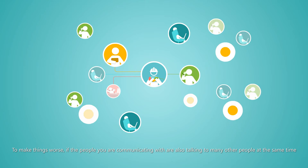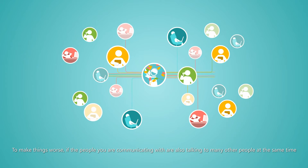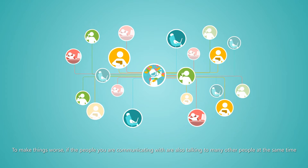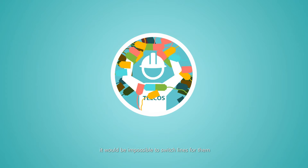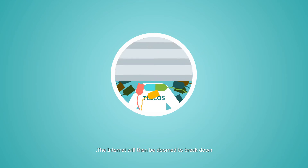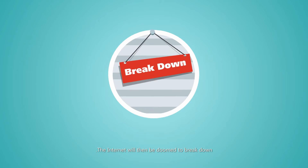To make things worse, if the people you're communicating with are also talking to many other people at the same time, it would be impossible to switch lines for them. The internet would then be doomed to break down.